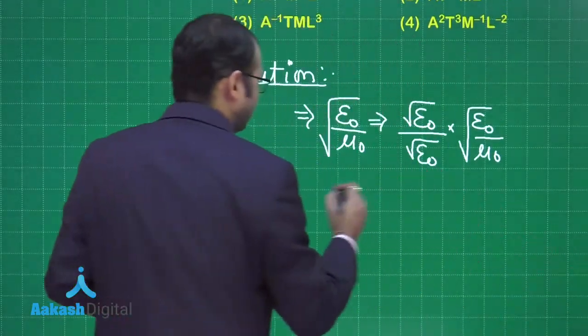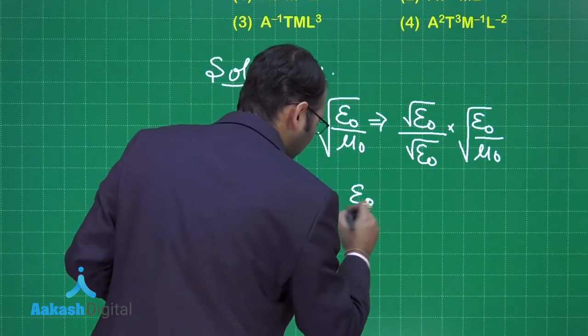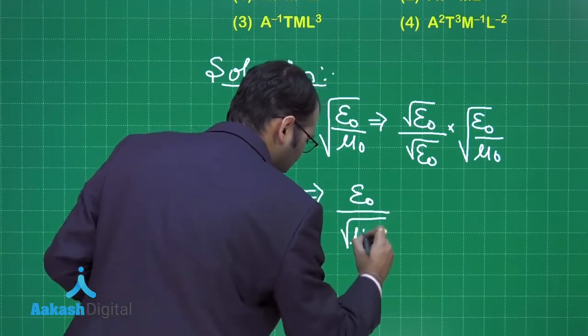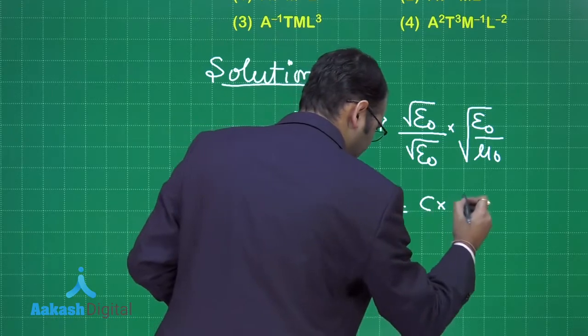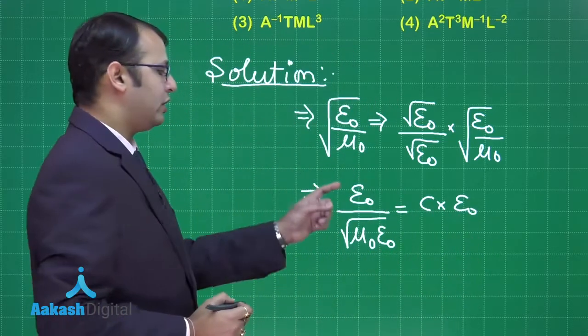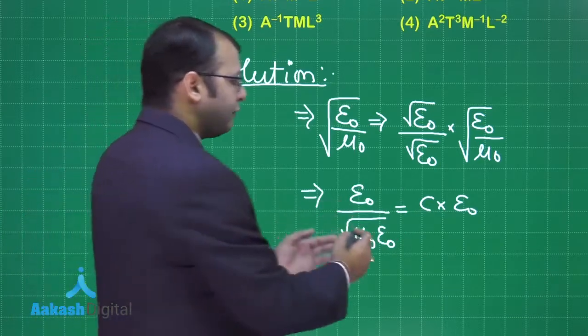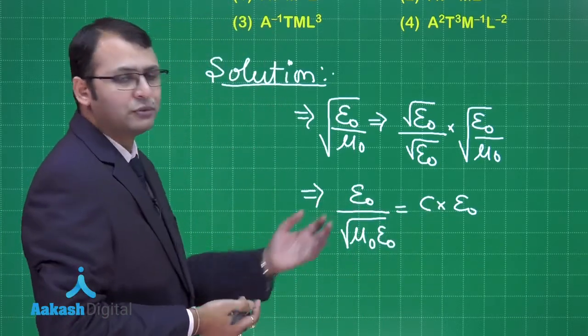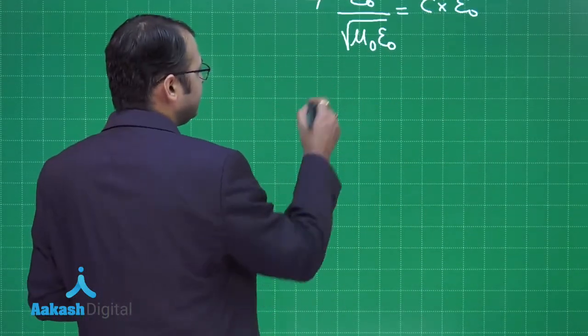Doing this, this equation will be epsilon 0 divided by square root of mu 0 epsilon 0. I think you are aware that 1 upon square root of mu 0 epsilon 0 equals c, the speed of light. Now, what I have to find is only the units or dimensions of epsilon 0. To find the dimensions of epsilon 0, it's pretty easy.